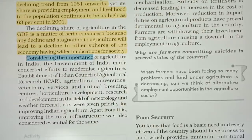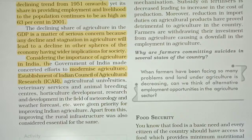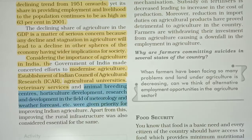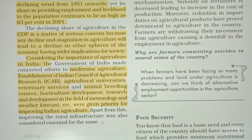Considering the importance of agriculture in India, the government of India made concerted efforts to modernize agriculture: establishment of ICAR (Indian Council of Agricultural Research), agricultural universities, veterinary services and animal breeding centers, horticulture development, research and development in the field of meteorology and weather forecasting were given priority for improving agriculture. Improving rural infrastructure was also considered essential.